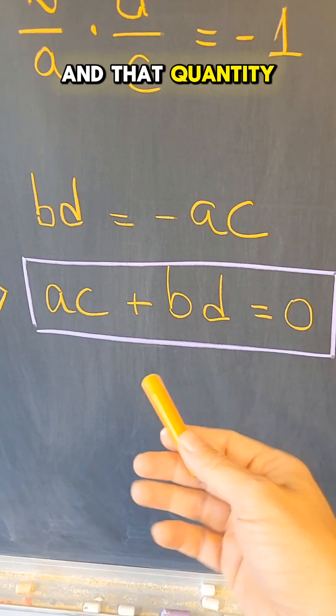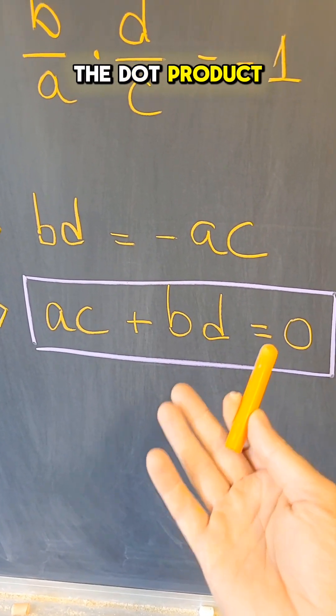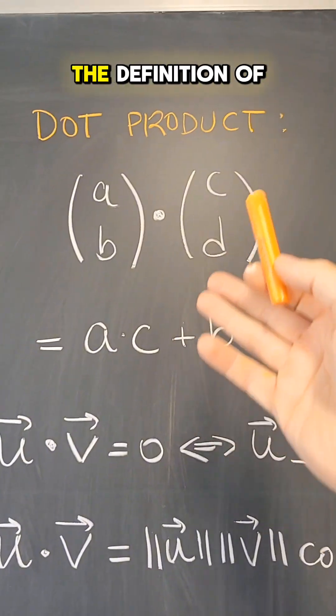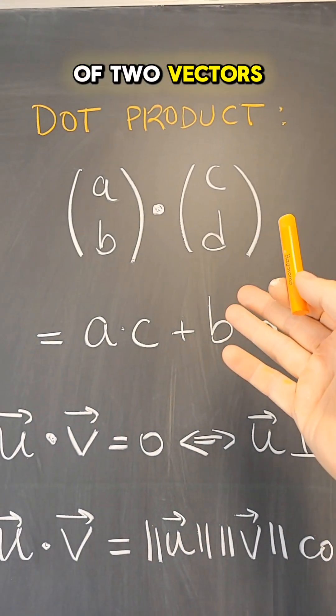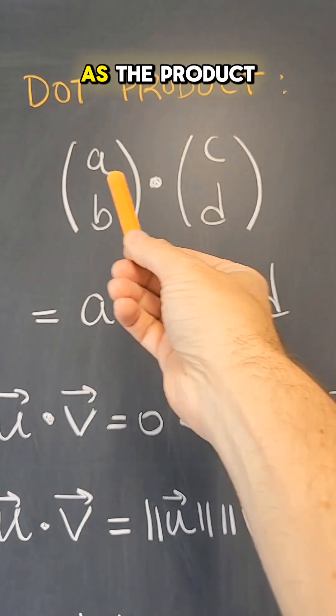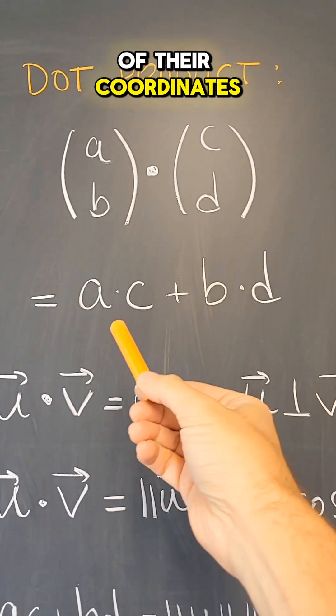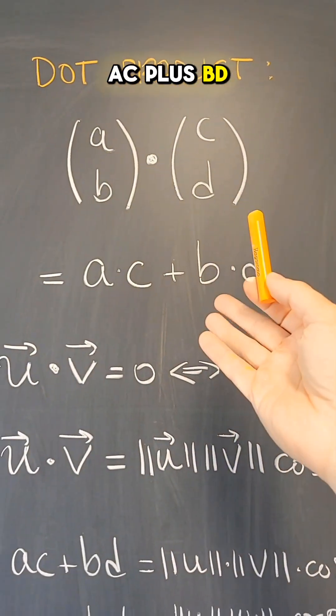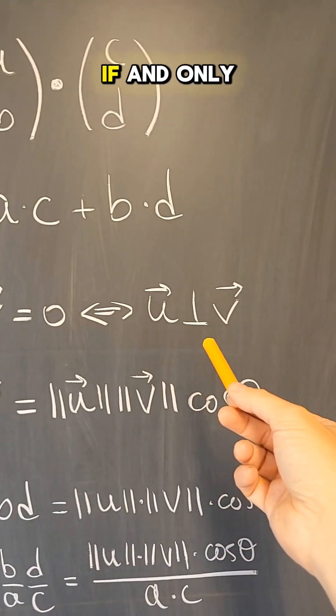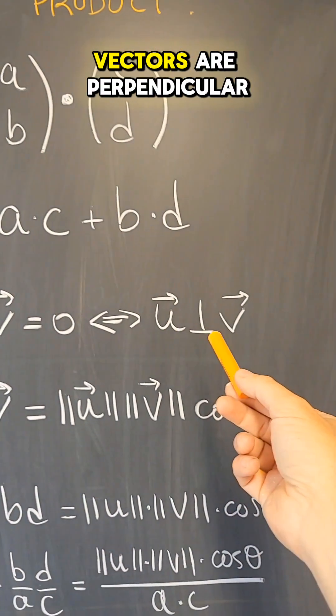And that quantity we recognize as the dot product of two vectors. And that construction actually leads to the definition of the dot product of two vectors, because if we define the dot product of two vectors as the product of their coordinates, ac plus bd, then what we've shown is that the dot product will be 0 if and only if the two vectors are perpendicular.